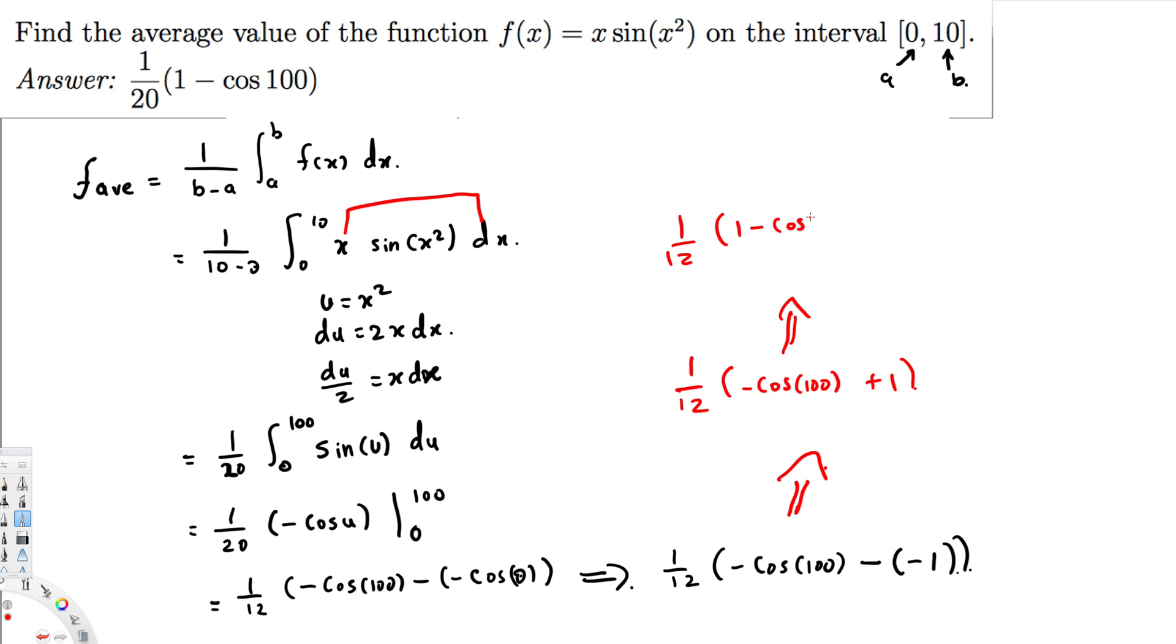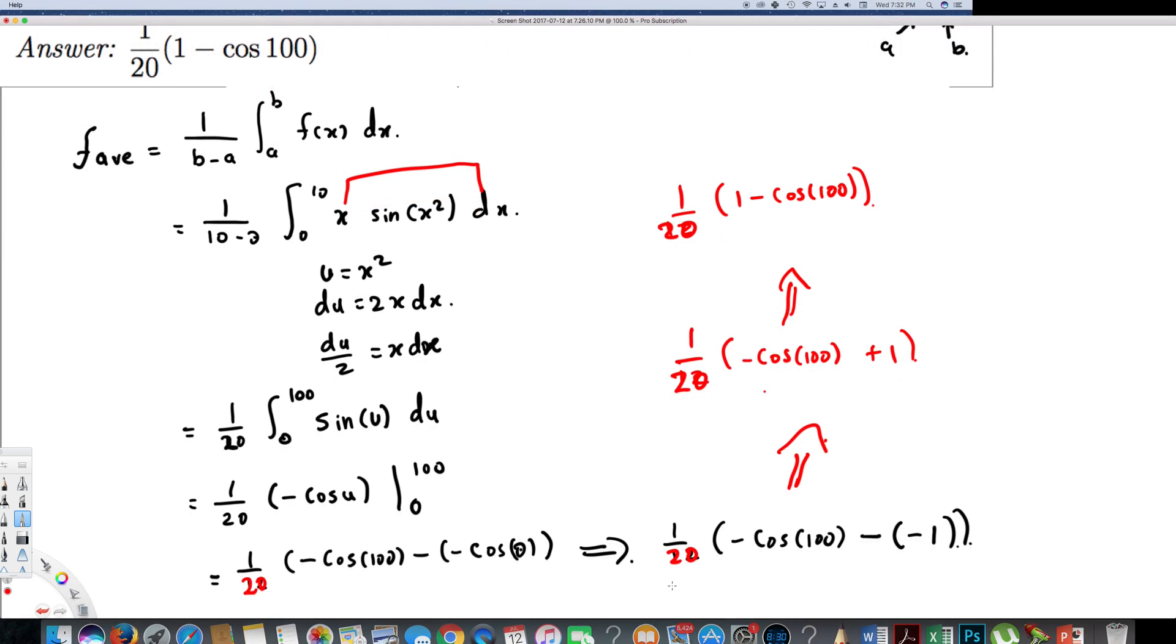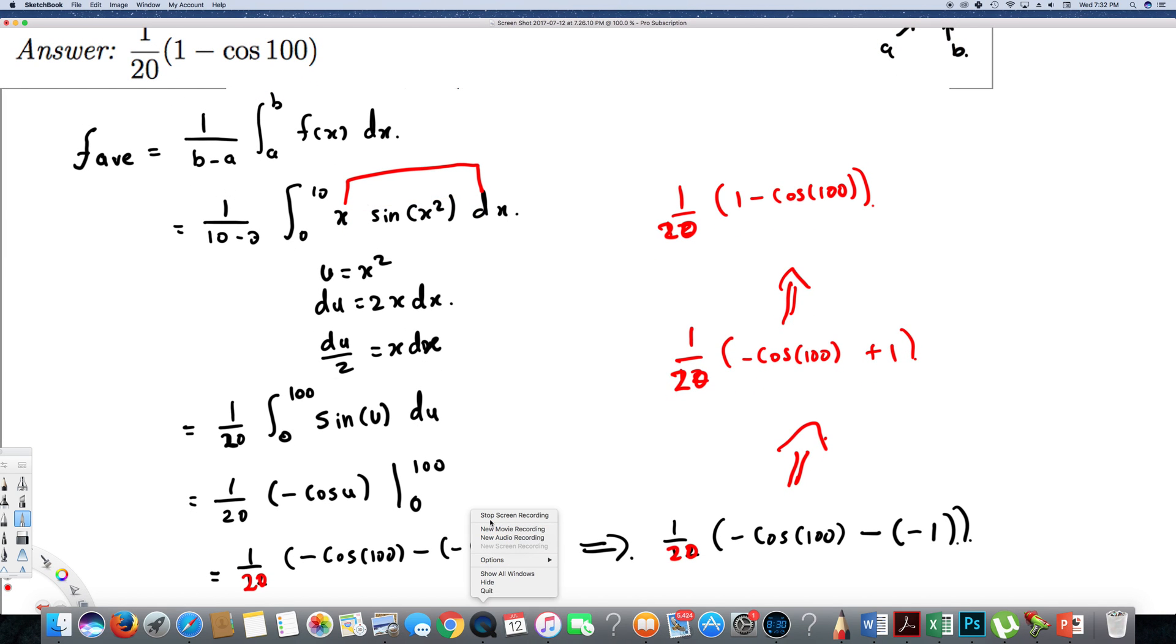And that's going to be the average value of this function, and that's how we do this kind of problems. I hope you guys find this video helpful. I don't know how did this one suddenly change to 12. This is 20, right? So we always have to keep the 20 right here. Okay, so this is going to be the final answer. I hope you guys find this video helpful. See you next time.